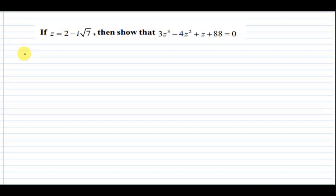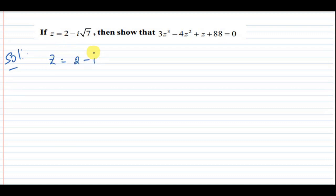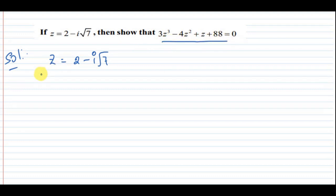Here, Z value is 2 minus i root 7. We will prove this result.